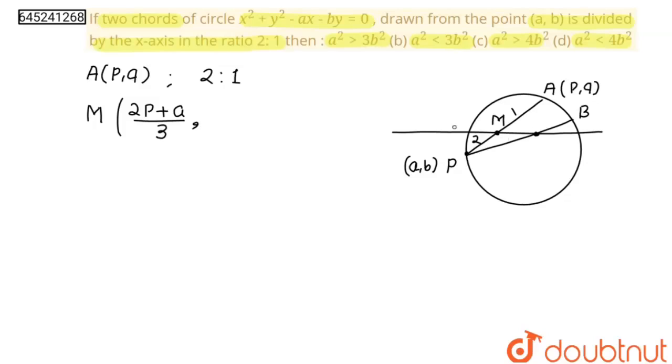And for y-coordinate: (2q + b)/3. This point M lies on the x-axis, so its y-coordinate will be 0. From here we get q = -b/2.